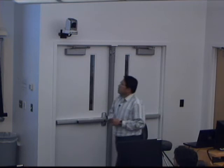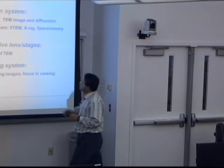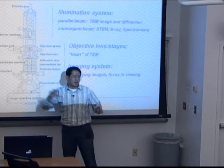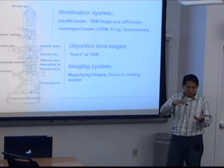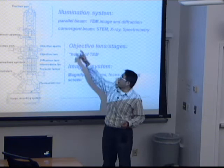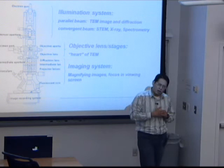Here's the basic setup and components for TEM. There are three parts. The first part is the illumination system, which includes an electron gun on the top and several condenser lenses. The main purpose of this first illumination system is to give a coherent electron source, so you can make it interact with the specimen by a parallel beam or a convergent beam.